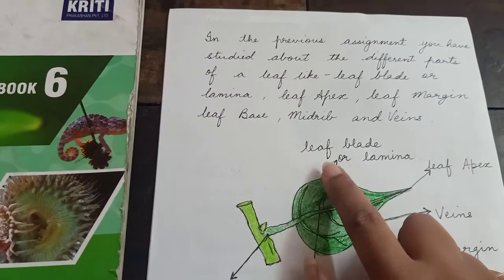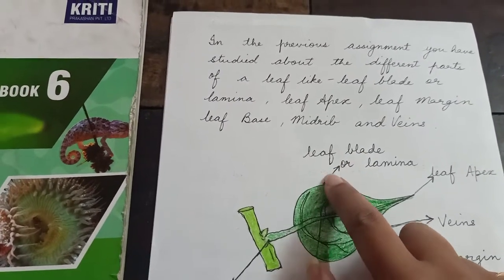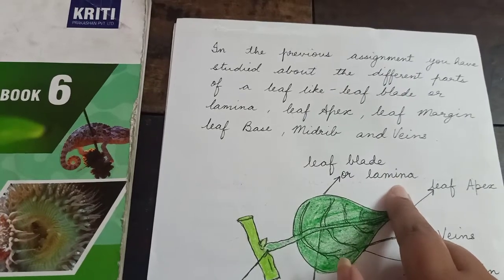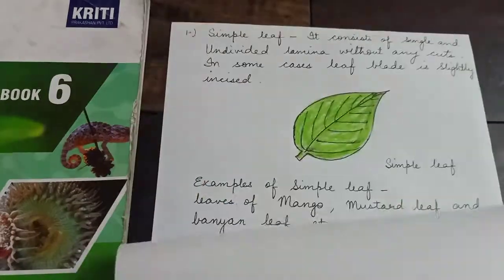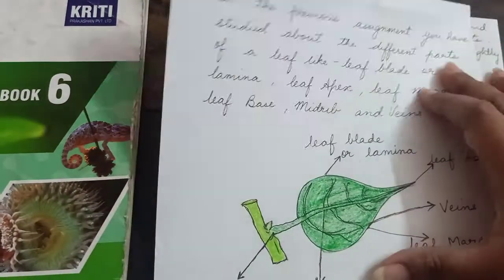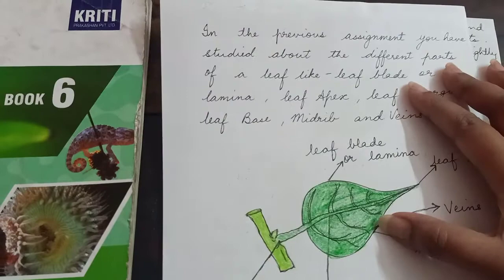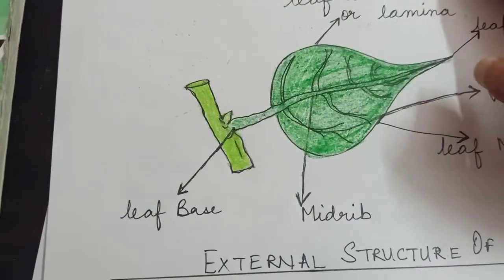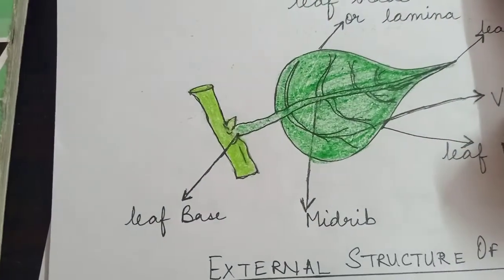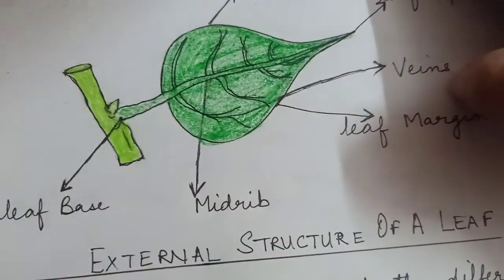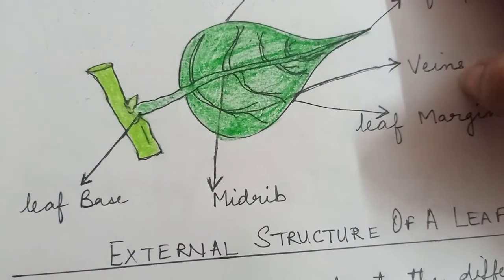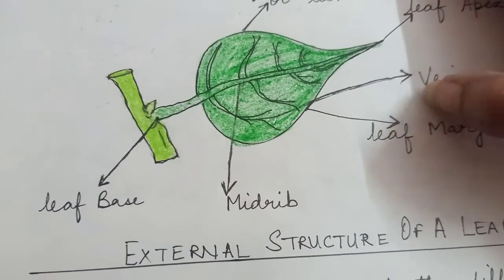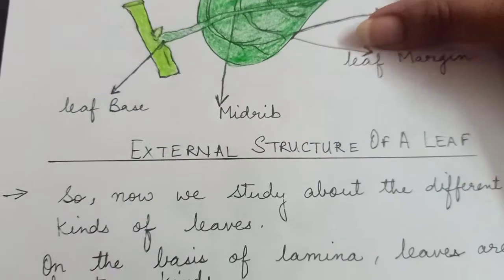The flat green part of the leaf is known as leaf plate or lamina. You can also see a few small veins in this diagram — these are known as veins, and they are present inside the leaf. This is the external structure of a leaf.